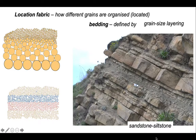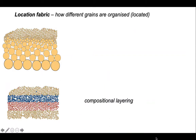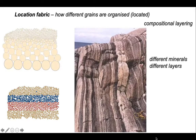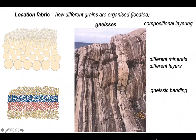Location fabrics occur in other materials and we can define them not only on the basis of grain size but also on composition. Here's an example of compositional layering — defined by the different proportions of different minerals in different layers. This is an example of gneissic banding formed in metamorphic rocks.